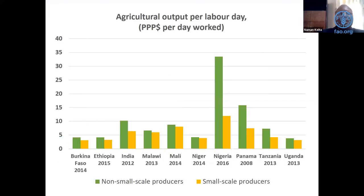Here is an example of agriculture output per labor day — number of PPP dollars per day per worker — for different countries. Most of these countries are included in AGRIS or the World Bank LSMS surveys. The number is not very high — less than 20 countries had data previously. This year, with EU data, the number of reporting countries has jumped substantially, with more than 20 EU countries now reporting on this indicator.